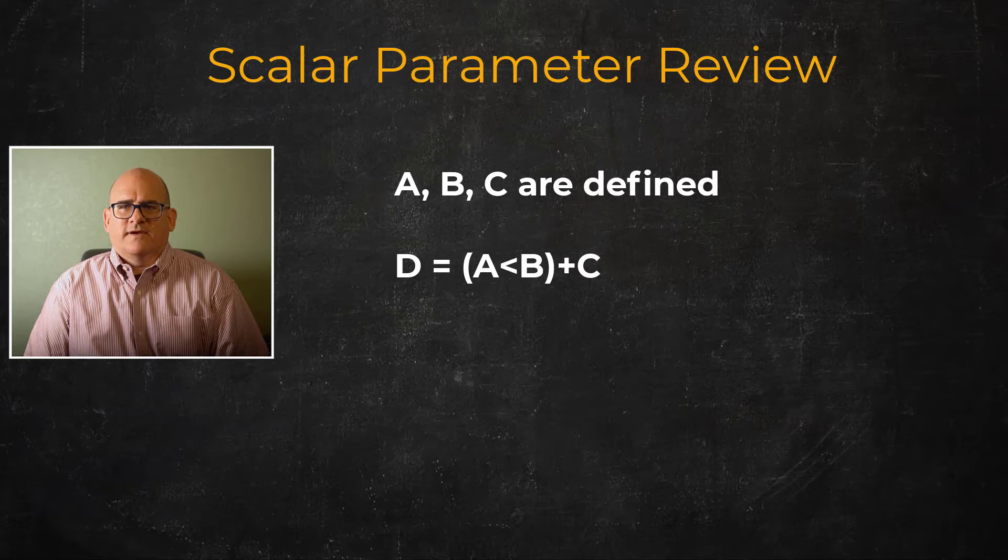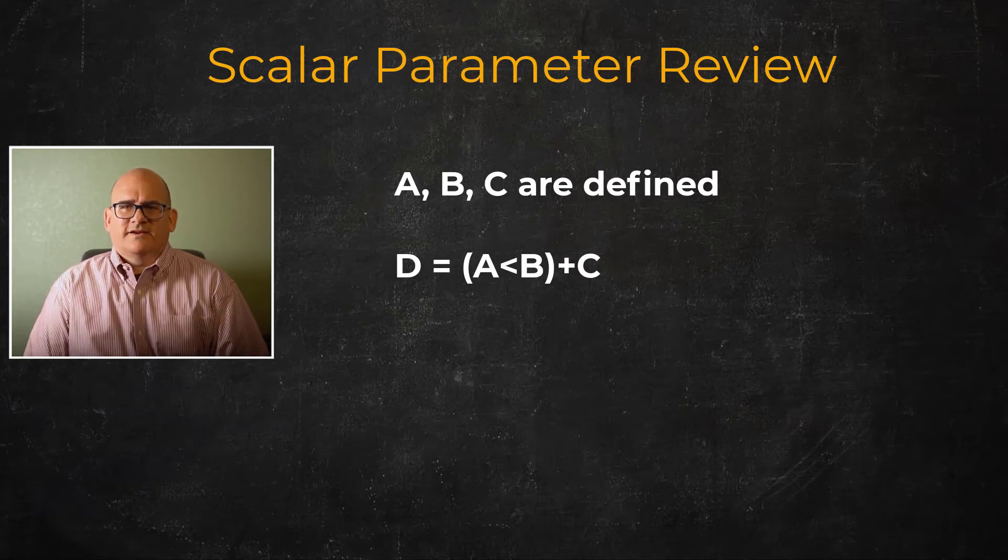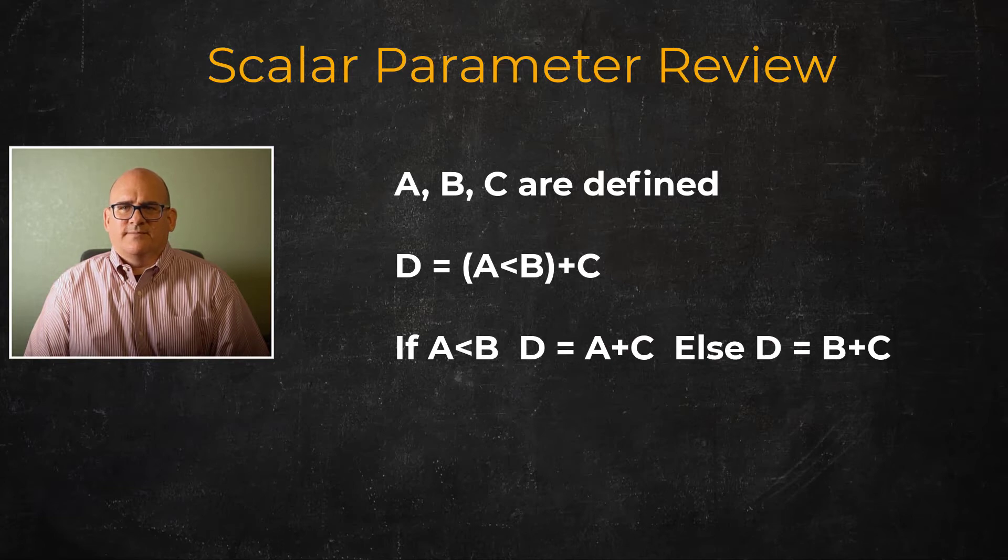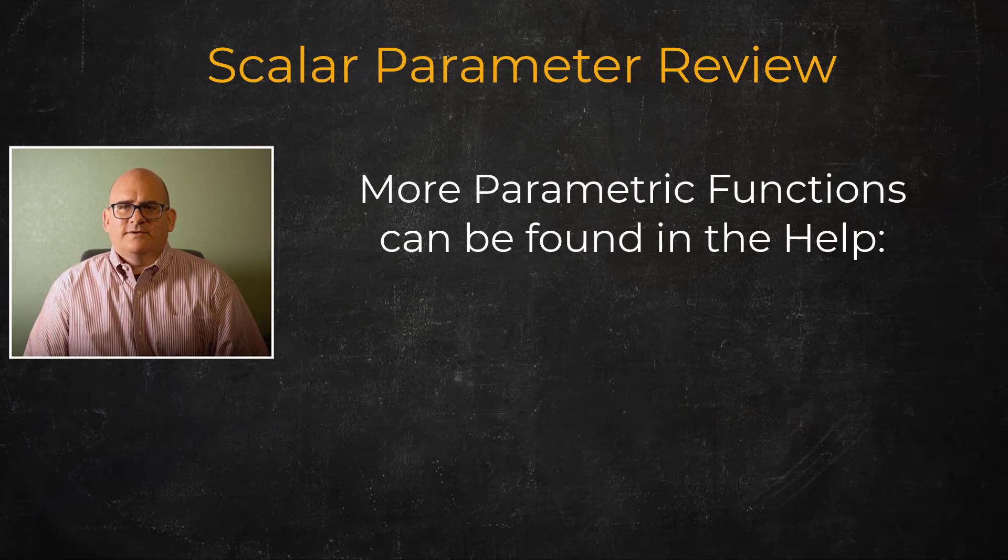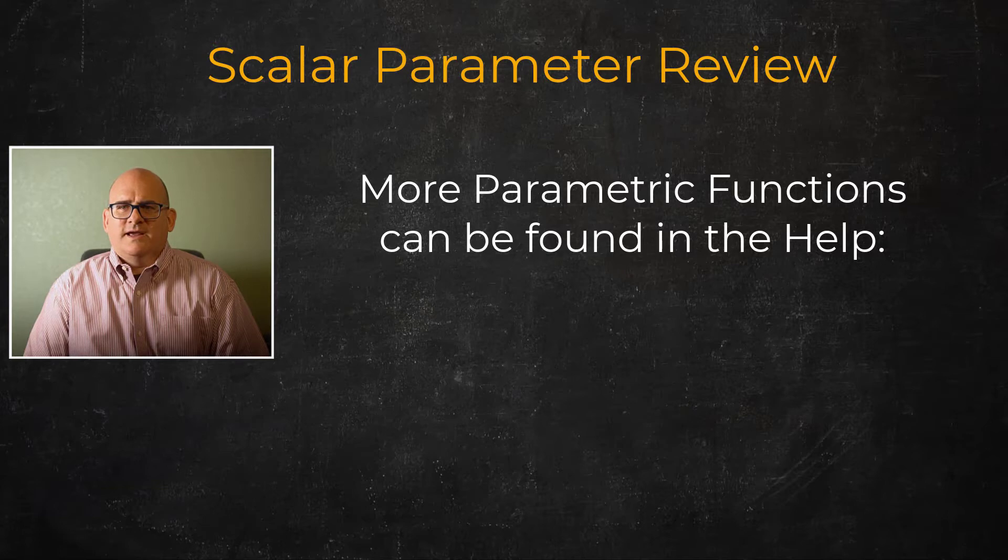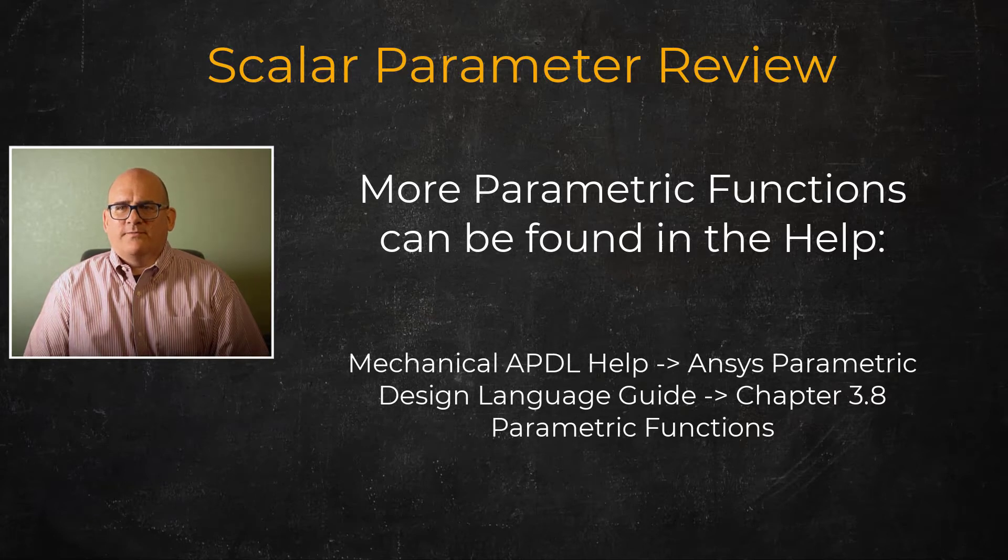Say we have parameters A, B, and C which values are already defined, then define the parameter D to be equal to the quantity of A less than B plus C. If A is less than B, then the expression evaluates to D is equal to A plus C. Otherwise, D is equal to B plus C. There are other operators available such as the absolute value, the natural log, and RANDX,Y which returns a random number in the range of X to Y, and the typical trigonometric operators.